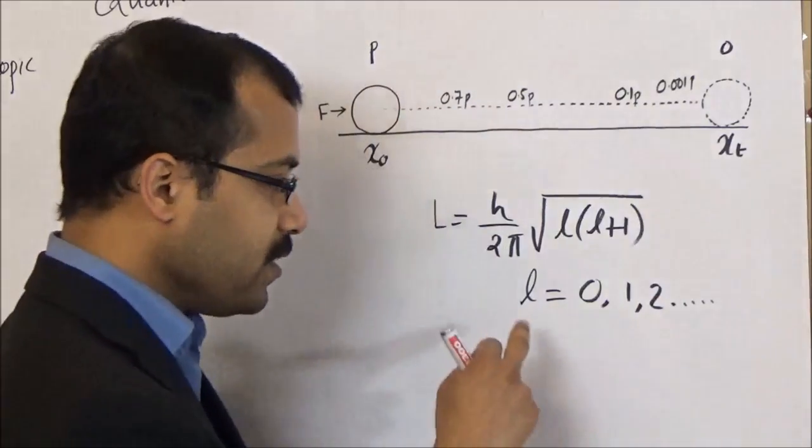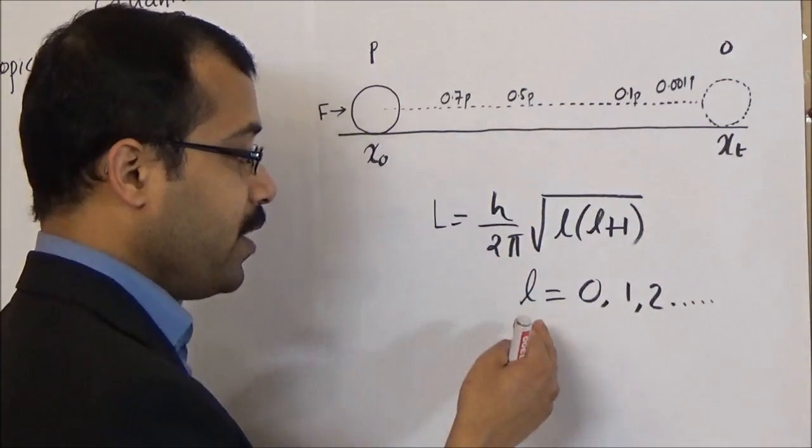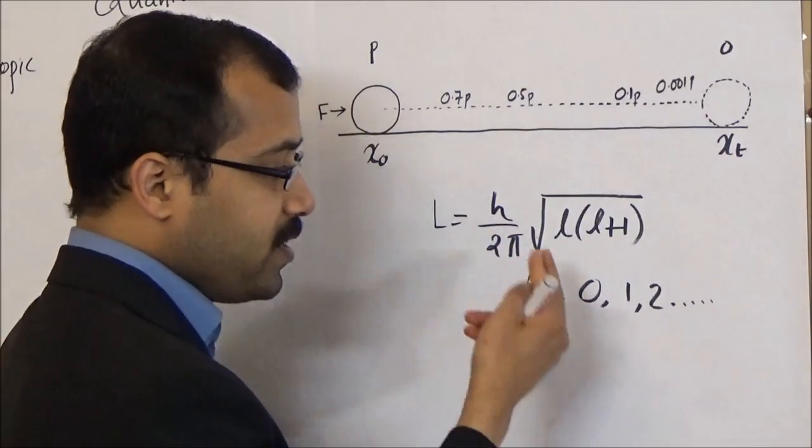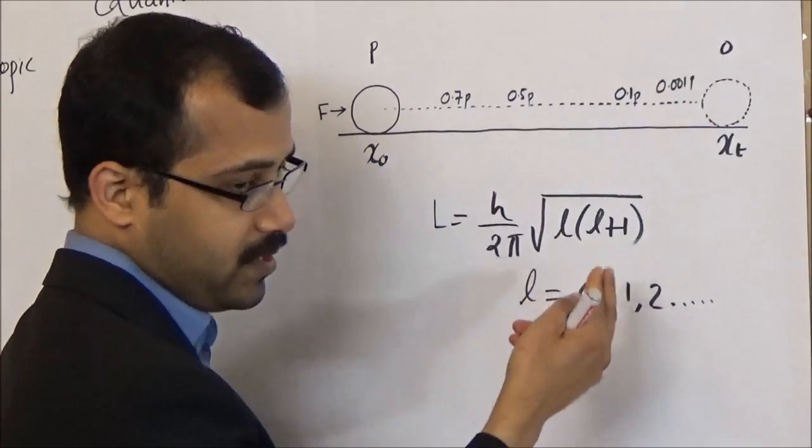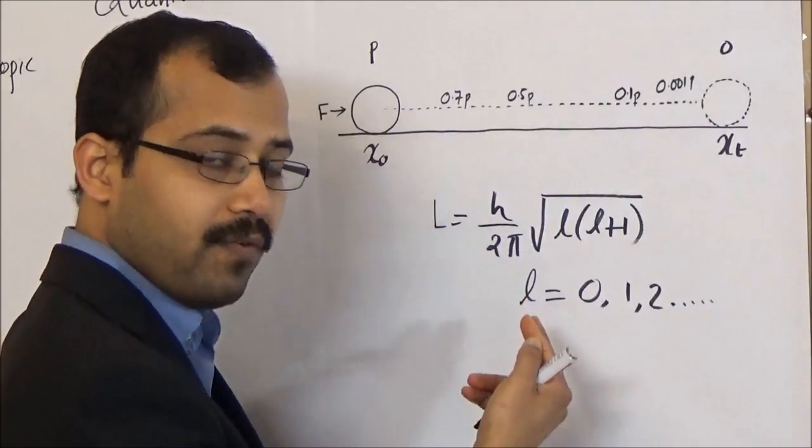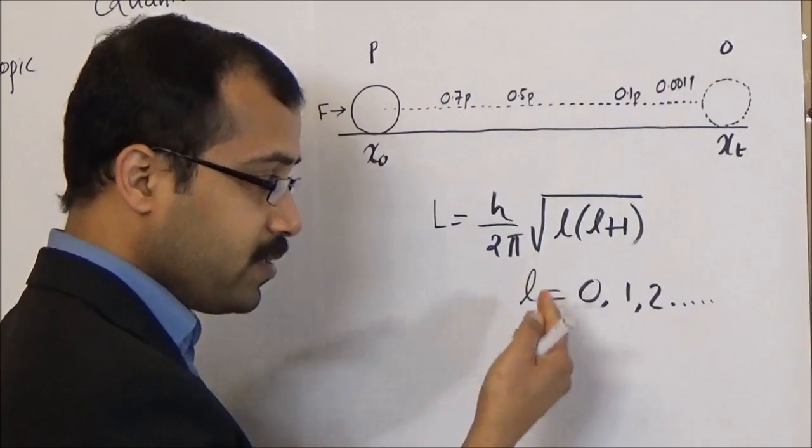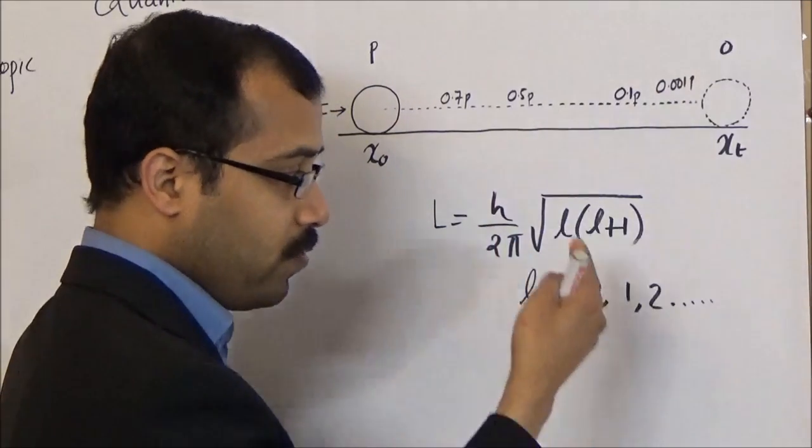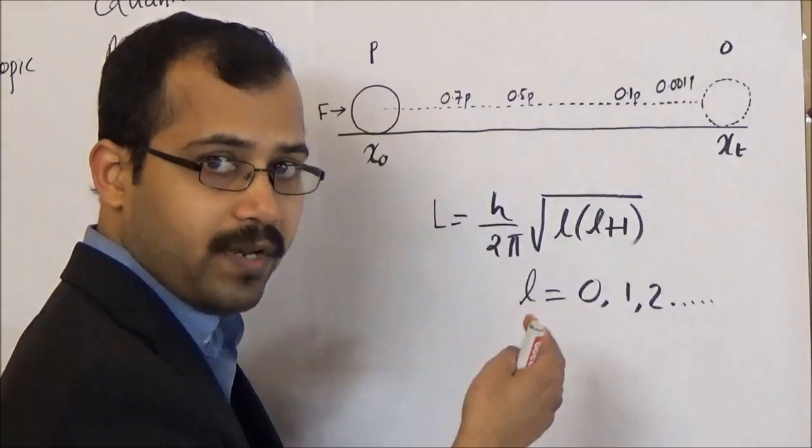Here we can see that the angular momentum, the orbital angular momentum, is determined by the values of L which are restricted to 0, 1, 2, etc. L cannot have the value between 0 and 1, means L cannot have a value like 0.5 or 1.3 or 2.7, etc.